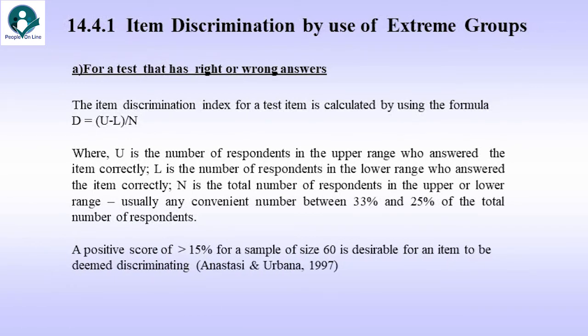A positive score greater than 15% for a sample size of 60 is desirable for an item to be deemed discriminating, and this was arrived at by Anastasi and Urbana, 1997. So, I think for all practical purposes, we can look at 15% to be a cutoff, and keep in mind, higher it is, the more discriminating the item is.